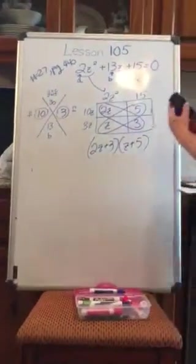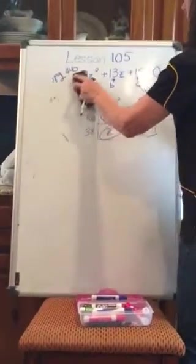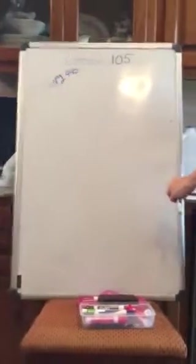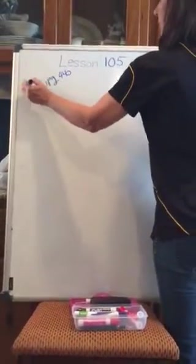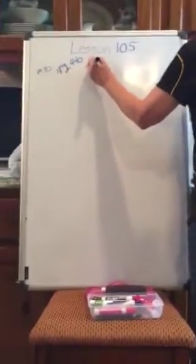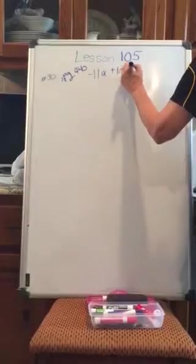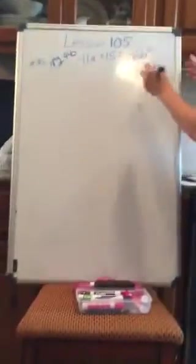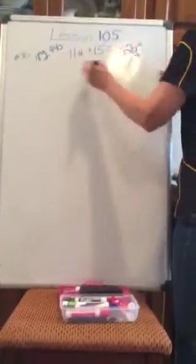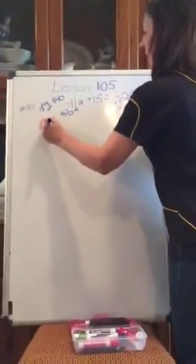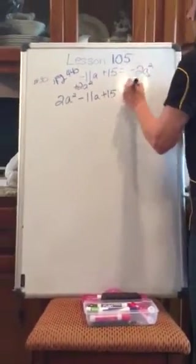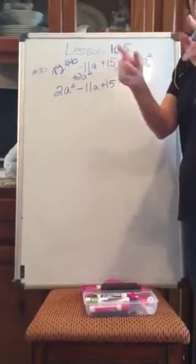All right, let's work one more. Let's work on that same page, page 440. Let's work one with a negative sign. Let's work 30, number 30. All right, number 30 says negative 11a plus 15 equals negative 2a squared. All right, I must have it in the standard quadratic form. So, 3 terms equal to 0. So, I'll add 2a squared on both sides, and I have 2a squared minus 11a plus 15 equals 0. I didn't solve for x on the last one. I will solve for x on this one.